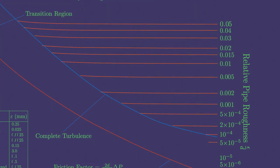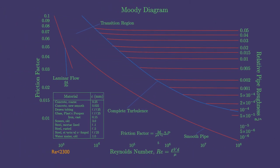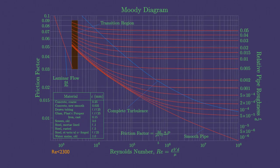Thus the friction factors are independent of the Reynolds number. The flow in that region is called fully rough turbulent flow.